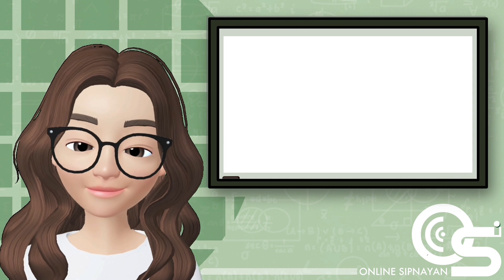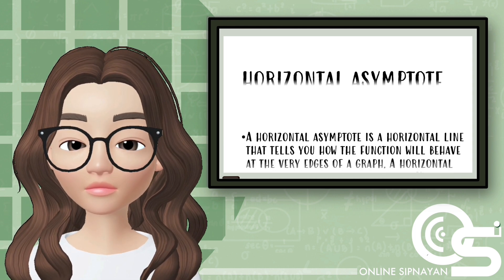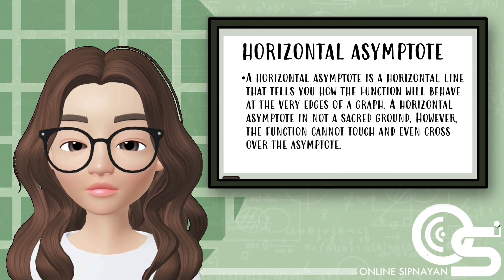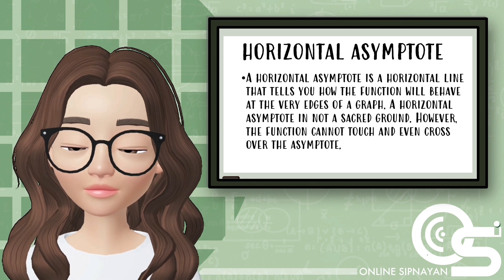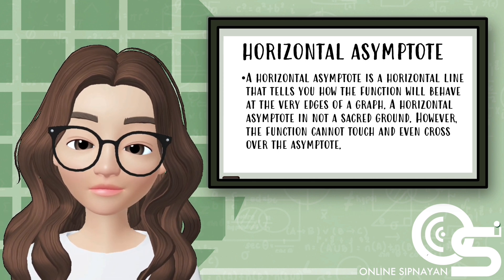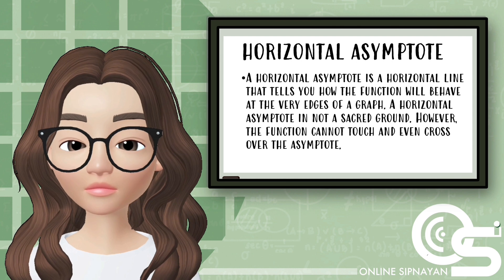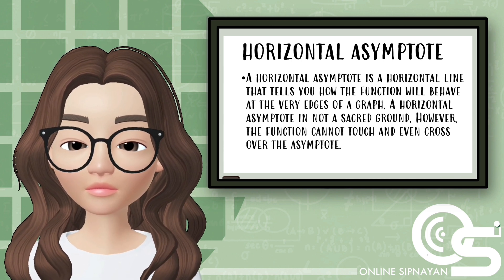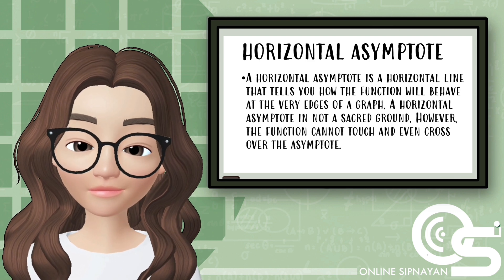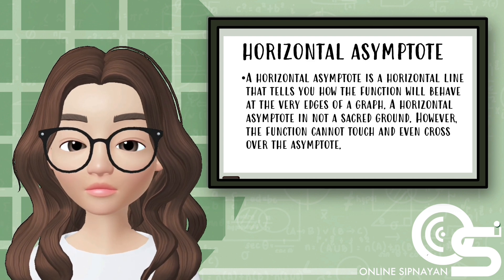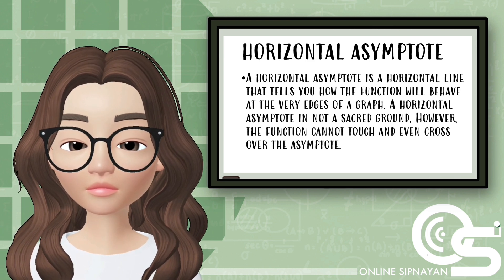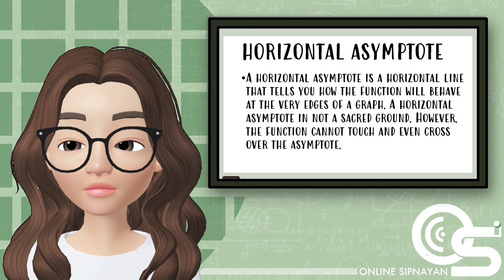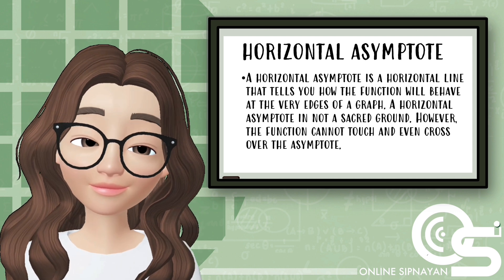Then we have a horizontal asymptote. A horizontal asymptote is a horizontal line that tells you how the function will behave at the very edges of a graph. A horizontal asymptote is not a sacred ground; however, the function cannot touch and may even cross over the asymptote.